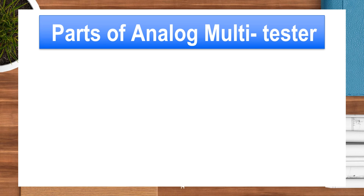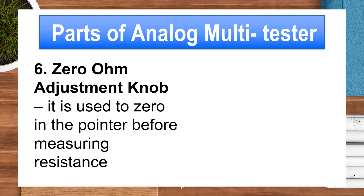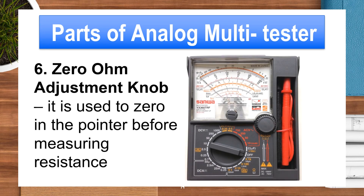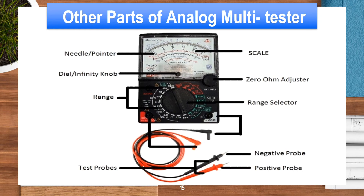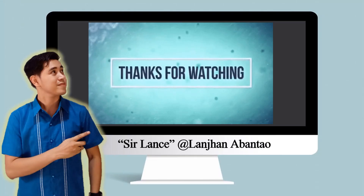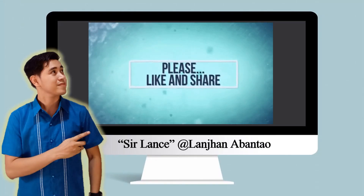Part 6 is the Zero Ohm Adjustment Knob. It is used to zero in the pointer before measuring resistance. Thank you for watching and listening.